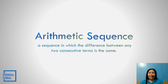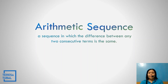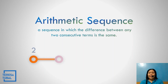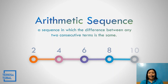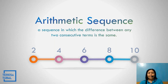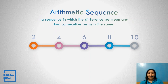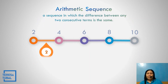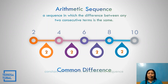What is arithmetic sequence? It is a sequence in which the difference between any two consecutive terms is the same. The example of the arithmetic sequence is 2, 4, 6, 8, and 10. The common difference is 2. The common difference is the constant difference in the arithmetic sequence.